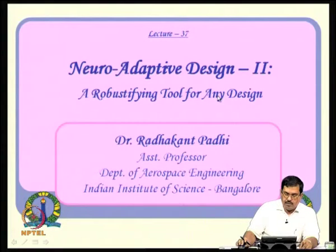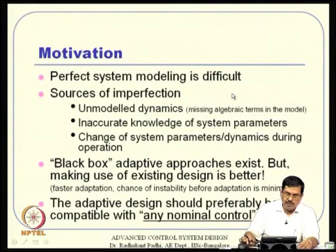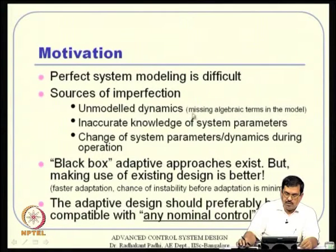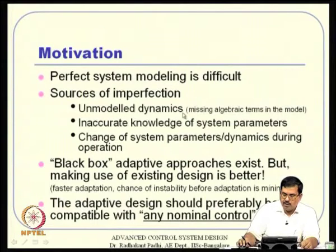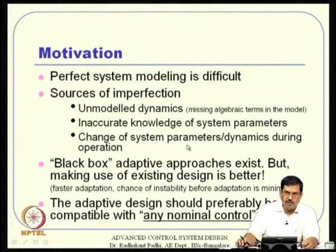We will study this neuroadaptive design in the framework of a generic tool. The motivation: perfect system modeling is difficult, and sources of inaccuracy can arise from unmodeled dynamics — that is, missing algebraic terms in the model — inaccurate knowledge of system parameters, or changes in system parameters or dynamics during operation itself.